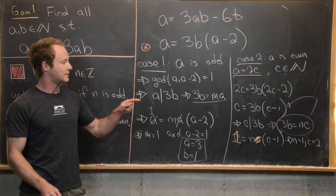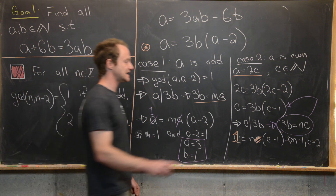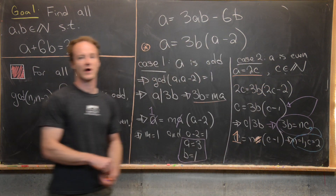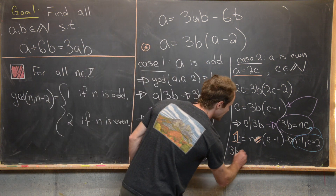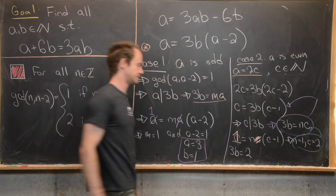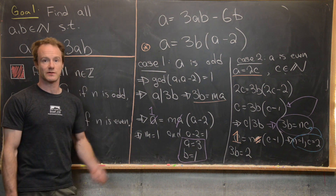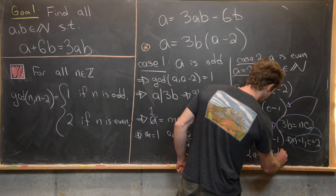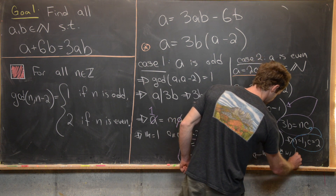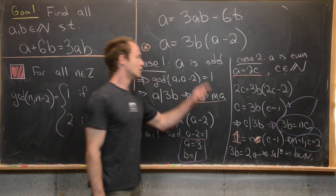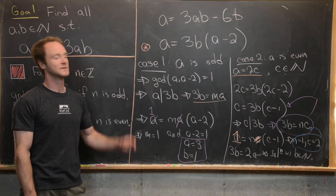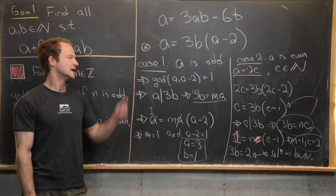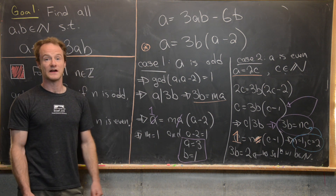Taking N equals 1 and C equals 2 and substituting into 3B equals N times C gives 3B equals 2. But since B must be a natural number — a whole number — there is no solution to this. So there is no solution in Case 2. To summarize: in Case 1 we got the solution A equals 3 and B equals 1; in Case 2, there was no solution. And that's a good place to stop.